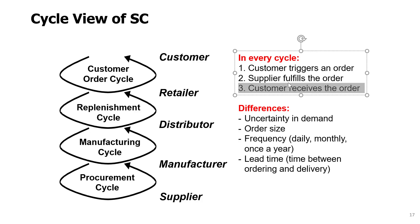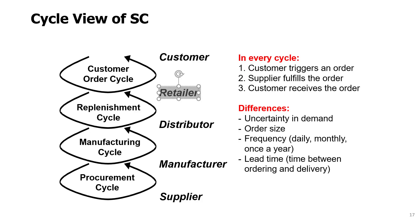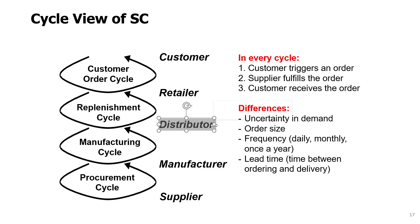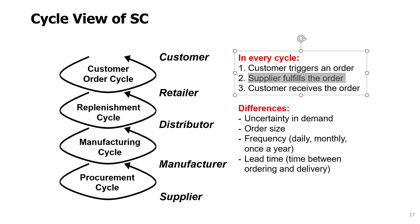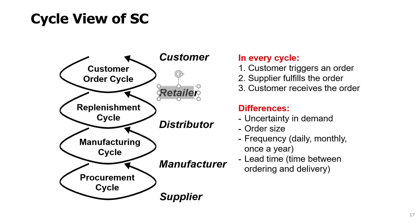When we say 'customer' here, we don't think about the end customer — we're talking about any company. For example, when a retailer is running out of a certain product and wants to get more units, they will request the quantity from a distributor. The distributor receives the order, checks its inventory, and if it has enough units, it sends a shipment to the retailer — and then the retailer, which is now the customer, will receive the order.